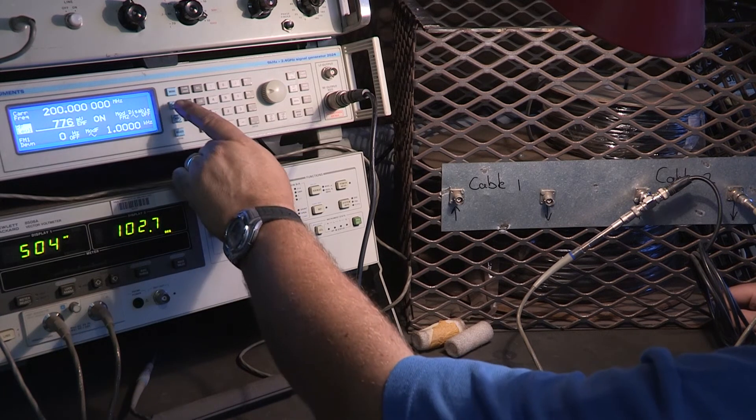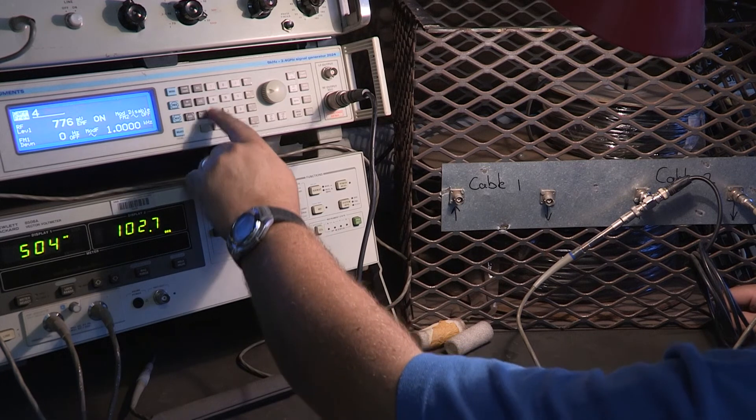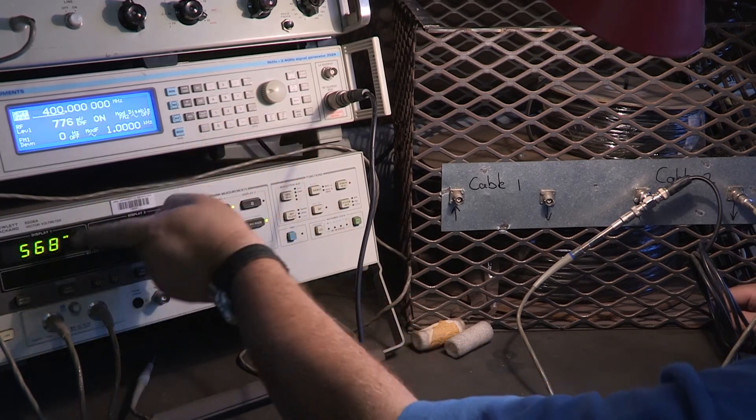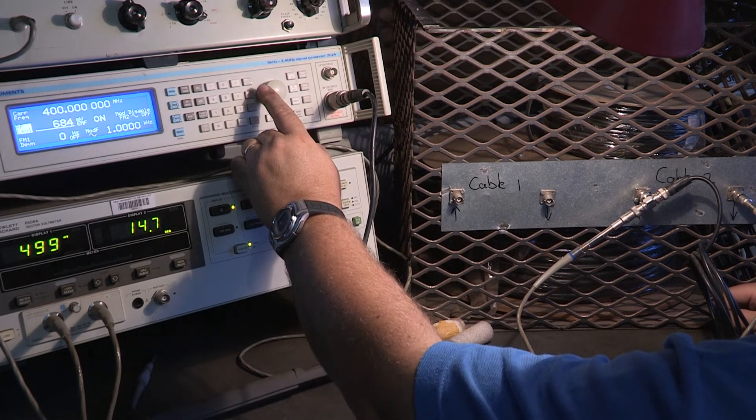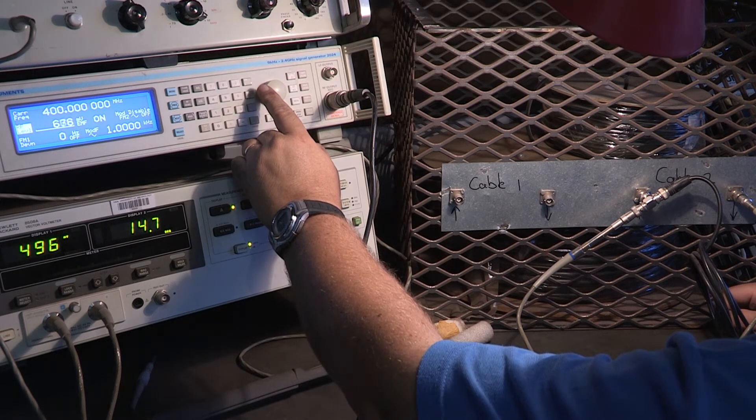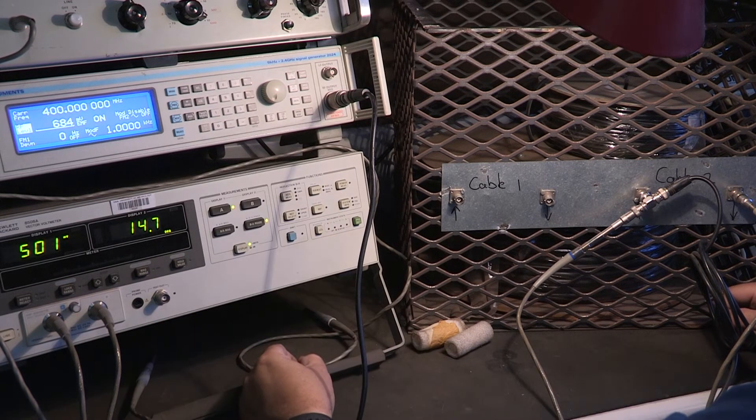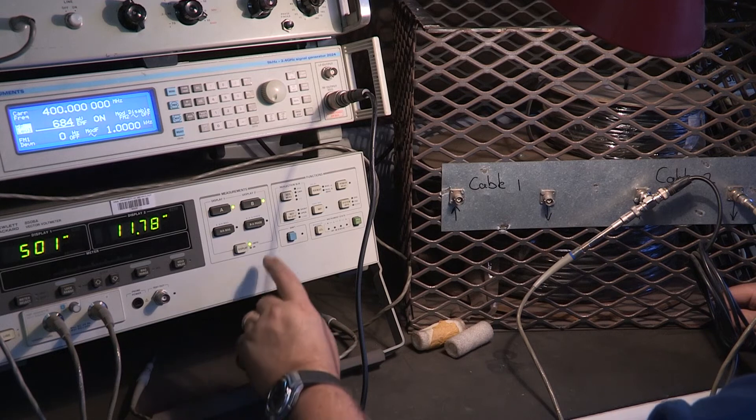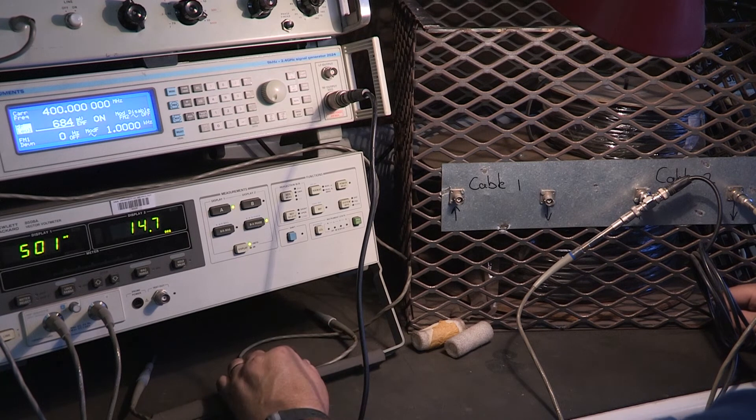Then we go for 400 megahertz. Make sure that channel 1 is 500 millivolts or close. Now I've got 11.78 millivolts and the phase is 14.7 degrees. So it's a positive angle in this cable.